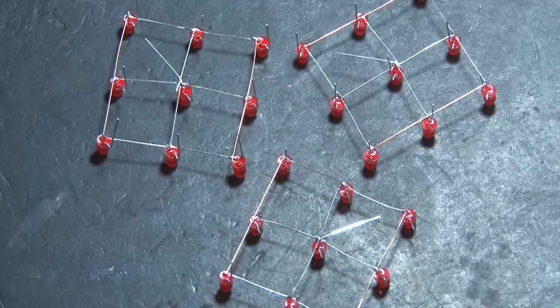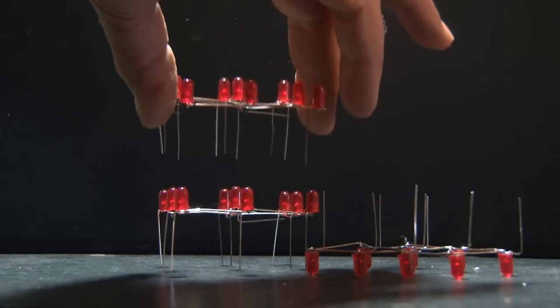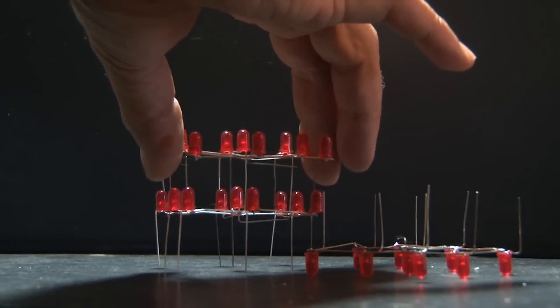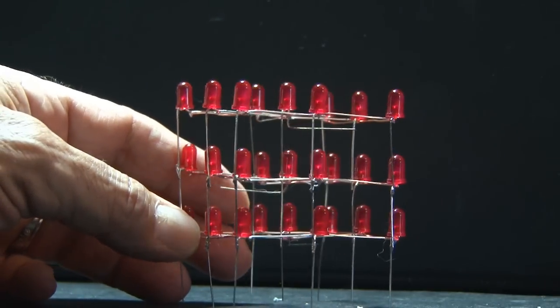Once you do the first one, the second and third layers are easier. Then, to make it a cube, the layers are stacked and the negative leads soldered together. The basic design of the LED Cube is done.